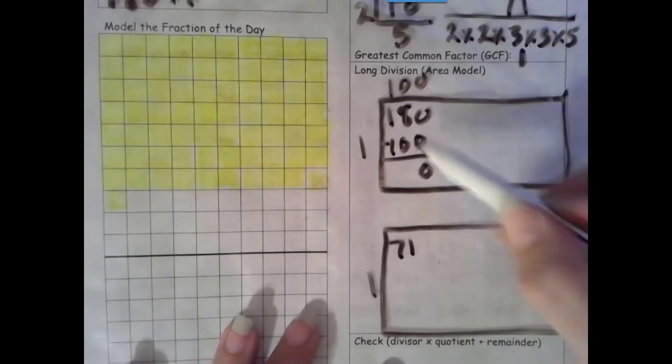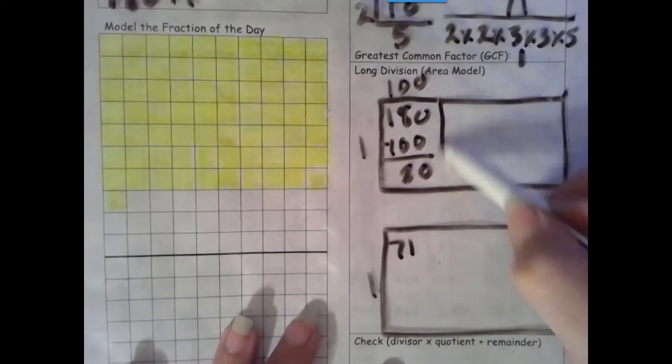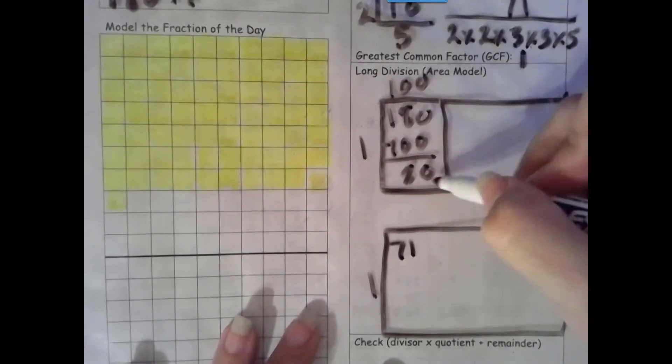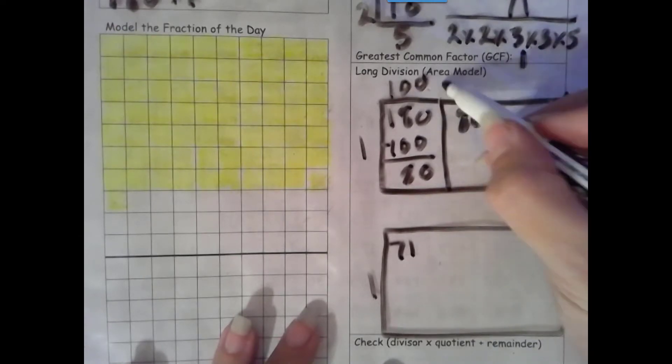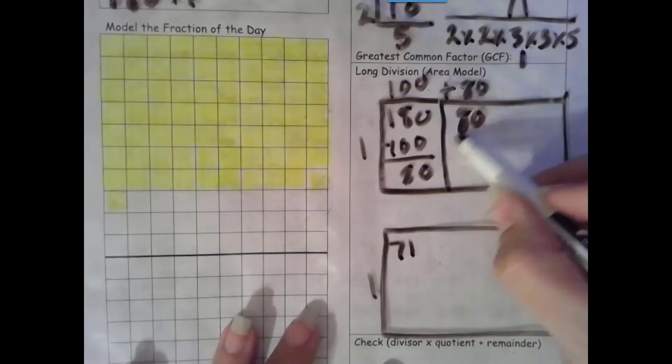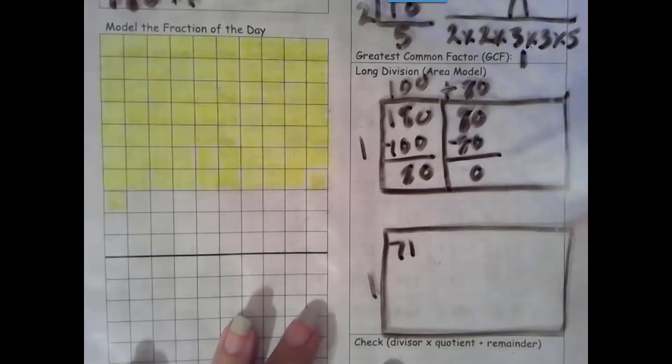1 times 100 is 100. Number is the same, here is the game. More on top, no need to stop. Number is the same, here is the game. I can take more out, so I'm going to bring that 80 up. 80 times 1 is 80. Number is the same, 0 is the game.